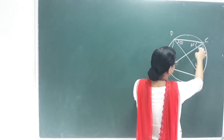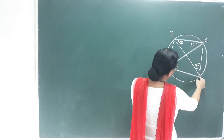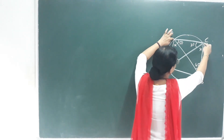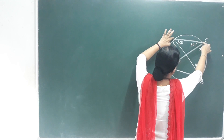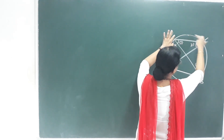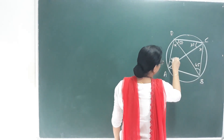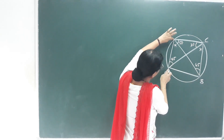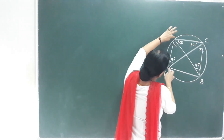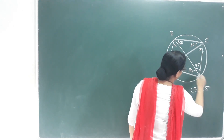Using the angles-in-the-same-segment theorem, angles subtended by the same arc are equal. For arc CD, the alternate arc gives us angle ADB equal to angle ACB. If we find angle ADB, it is 45 degrees. Then angle ACD equals angle ABD, which is 30 degrees. So angle B equals 30 plus 45, which is 75 degrees.